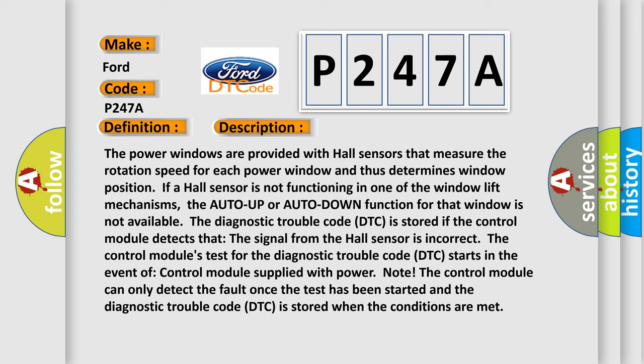The diagnostic trouble code DTC is stored if the control module detects that the signal from the Hall sensor is incorrect. The control module's test for the diagnostic trouble code DTC starts in the event of control module supplied with power.